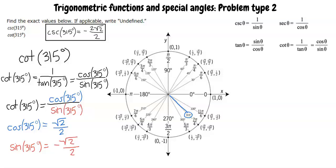Now we can substitute these two values into the expression and write cotangent of 315 degrees equals square root of 2 over 2 divided by negative square root of 2 over 2. Now we need to simplify this.